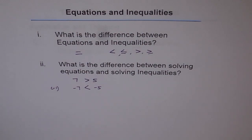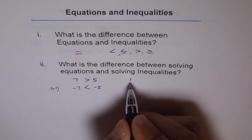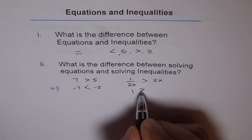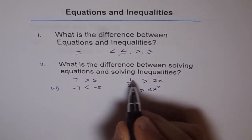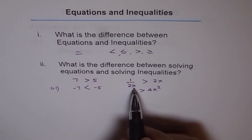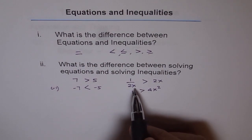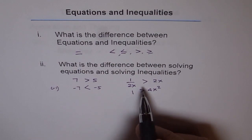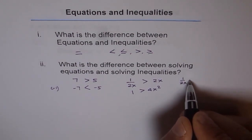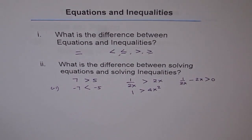Let me give you one more example with variables. If I have an inequality saying 1 over 2x is greater than 2x, I cannot simply write 1 is greater than 4x squared by multiplying by 2x on both sides. Why not? Because x could be a negative number — x belongs to the domain of real numbers. If x is negative, I should have changed the sign. Therefore, to solve this kind of inequality, we are always supposed to write 1 over 2x minus 2x is greater than 0, and then solve the inequality. Otherwise, you will arrive at a wrong solution.